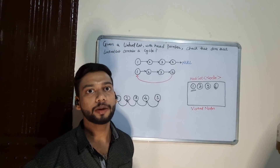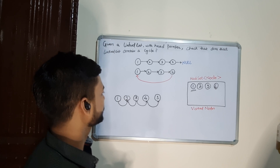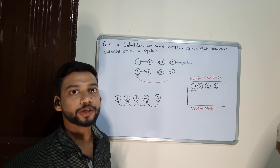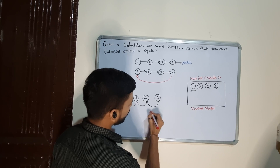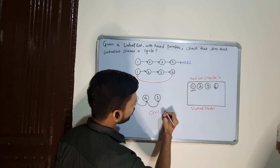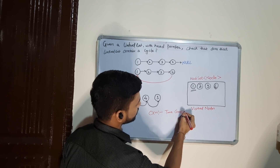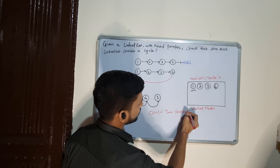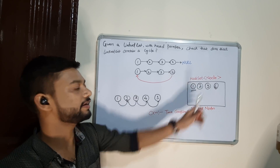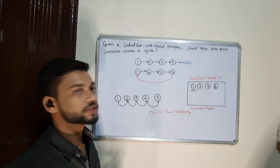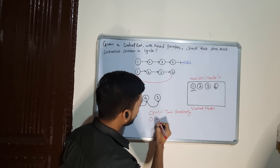Now let's talk about the time complexity and space complexity of this algorithm. Since we traverse through the complete linked list, the time complexity will be O(N). As we are using a hash set to keep track of all visited nodes, the space complexity will also be O(N).